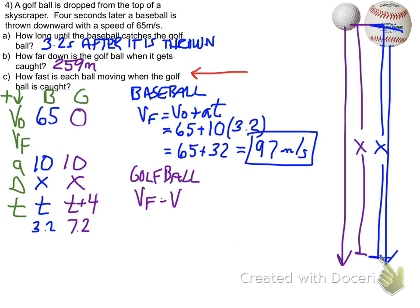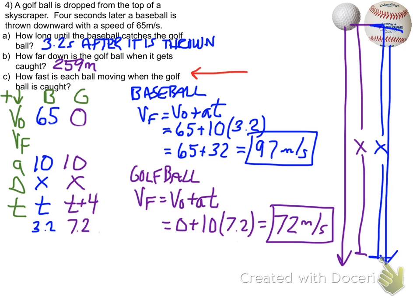For the golf ball we have V final equals V zero plus AT. Initial velocity is zero. Acceleration is 10. And time for the golf ball remember we add 4 seconds more. So it's 7.2 seconds. Which gives us 72 meters per second for the golf ball.